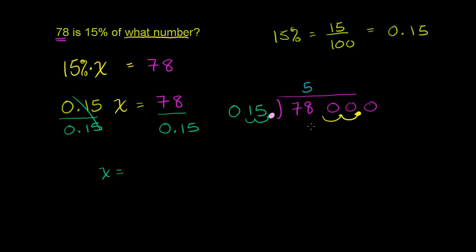5 times 5 is 25. Put the 2 up there. 5 times 1 is 5, plus 2 is 7. 75, you subtract. 78 minus 75 is 3. Bring down a 0. Bring down a 0. 15 goes into 30 exactly 2 times.